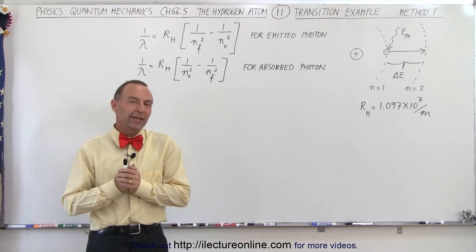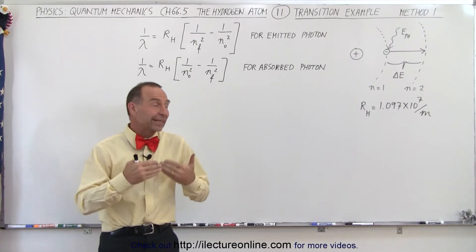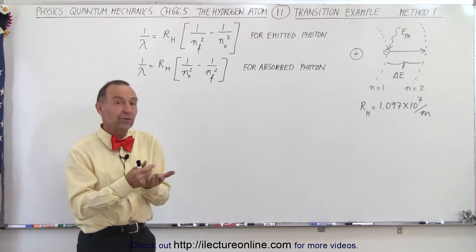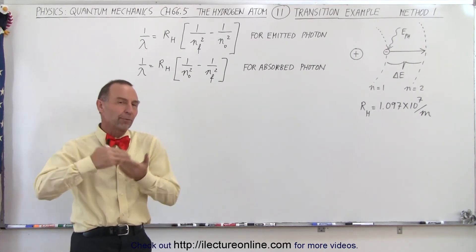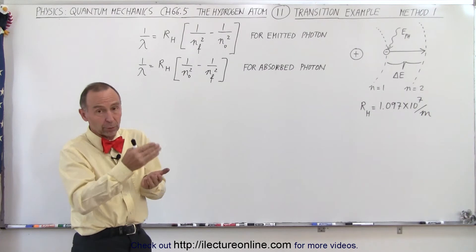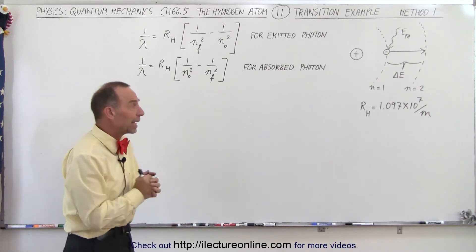Welcome to ElectronLine. There are several ways in which we can calculate the wavelength or frequency of a photon either being absorbed or emitted when an electron jumps from a lower to higher or from a higher to lower orbit in a hydrogen atom.